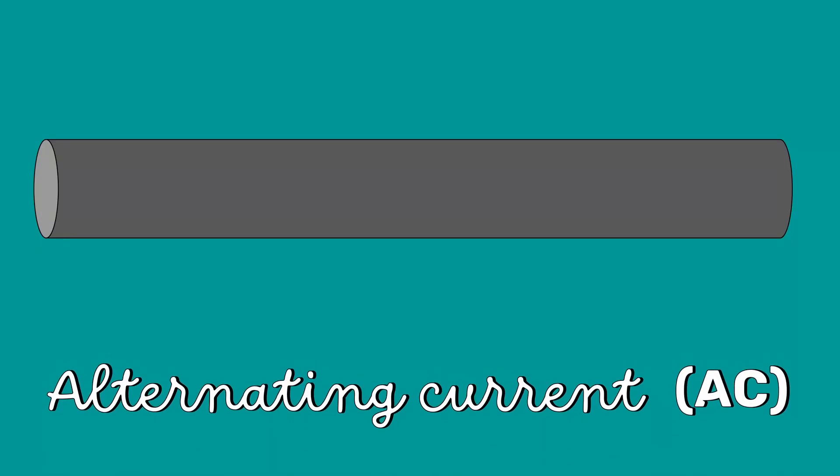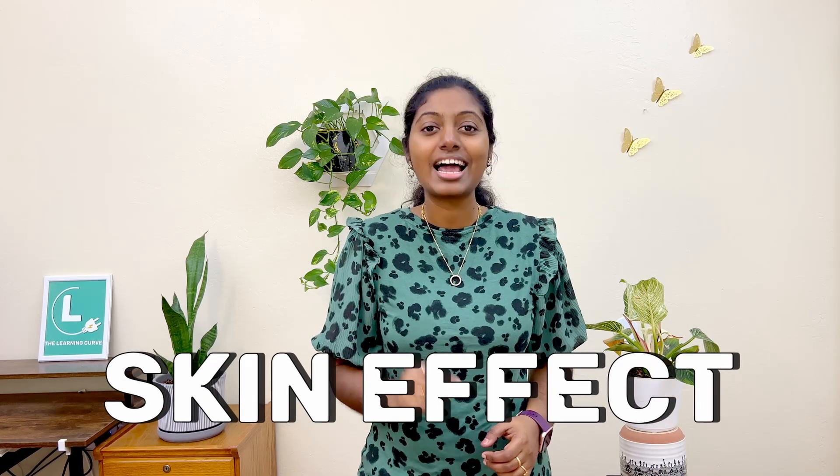When a conductor is carrying alternating current or AC, this current is not uniformly distributed over the whole cross section of the conductor. The current tends to concentrate near the surface of the conductor. This is called the skin effect and that's the topic for today's video.